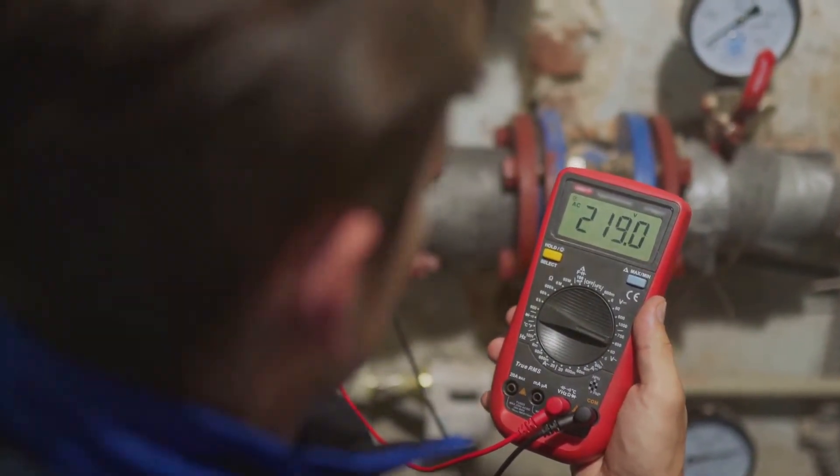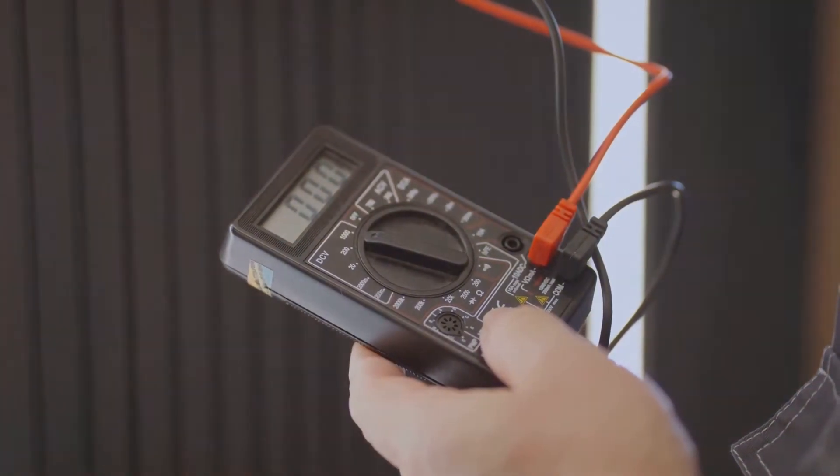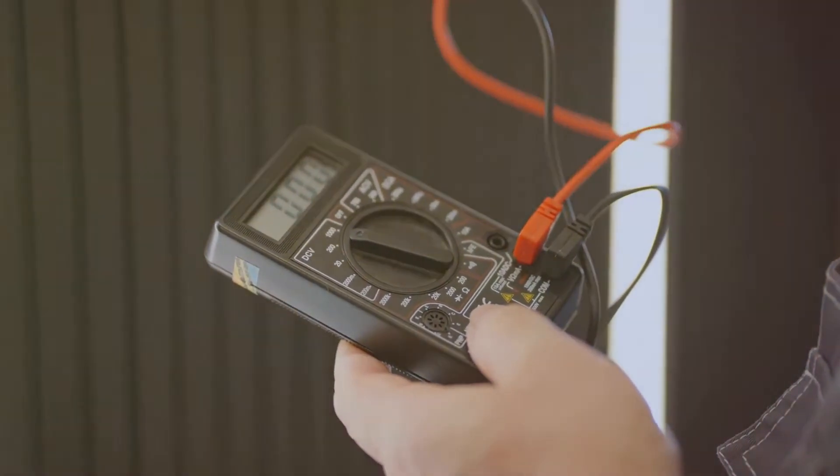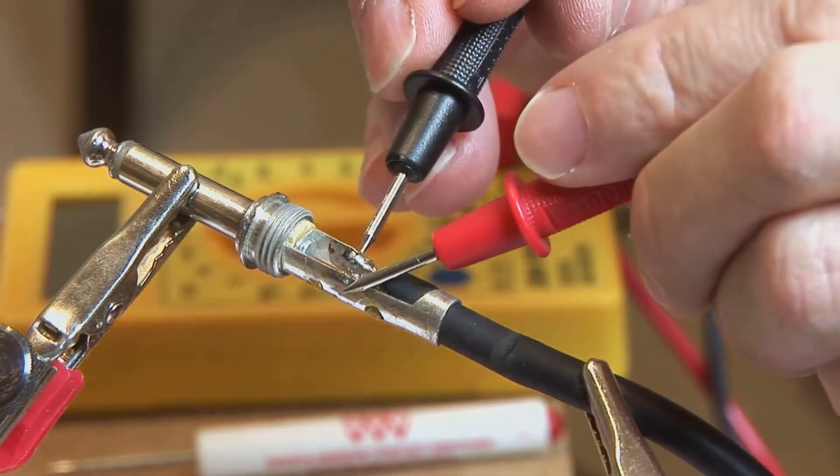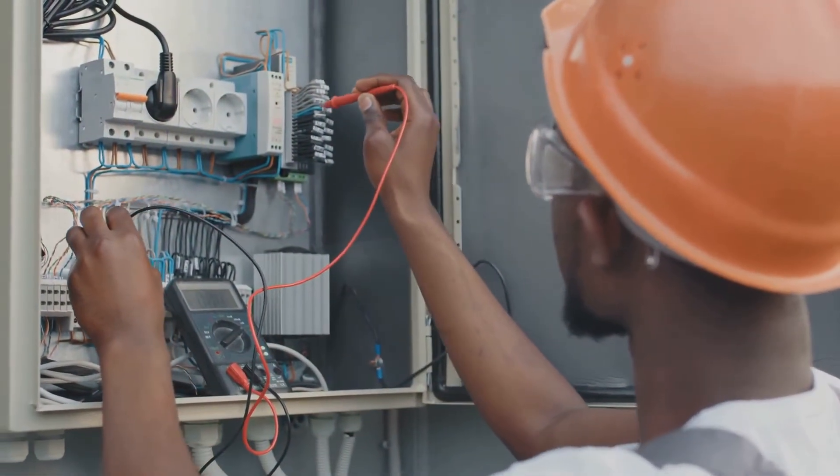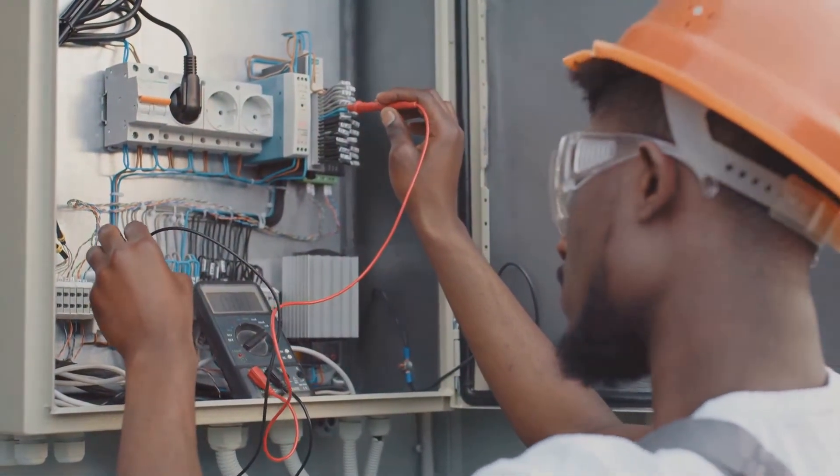If the multimeter reads infinity or OL (open loop), it means there's no electrical continuity through the coil. This indicates a break in the wire somewhere. A solenoid with a broken coil is as useful as a screen door on a submarine.